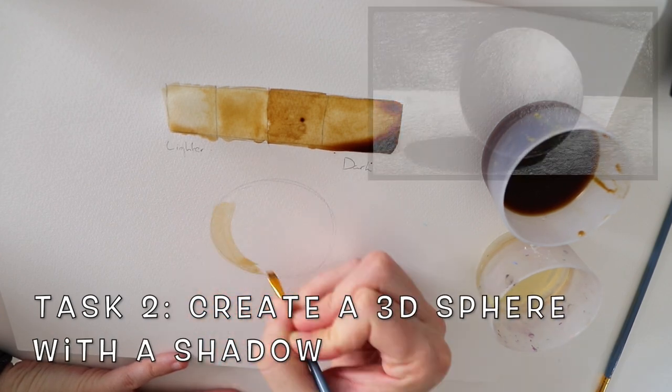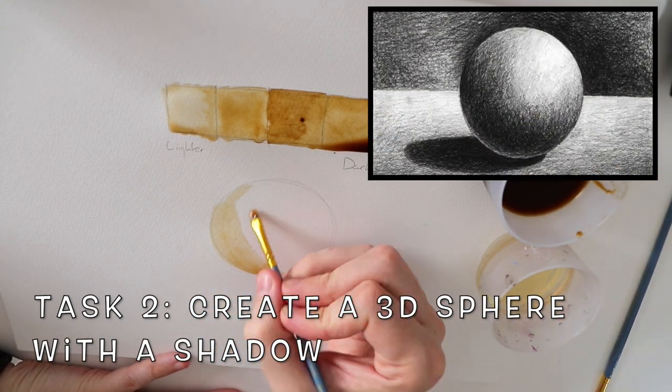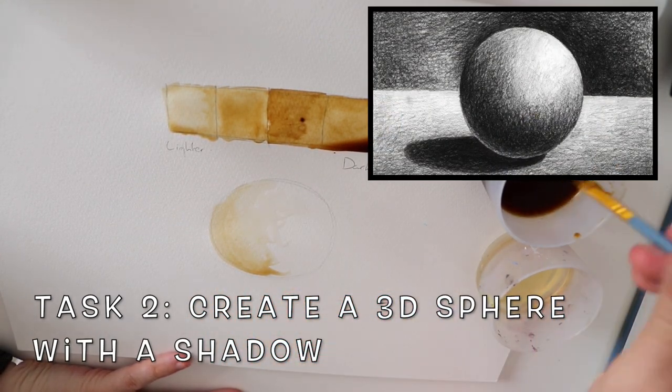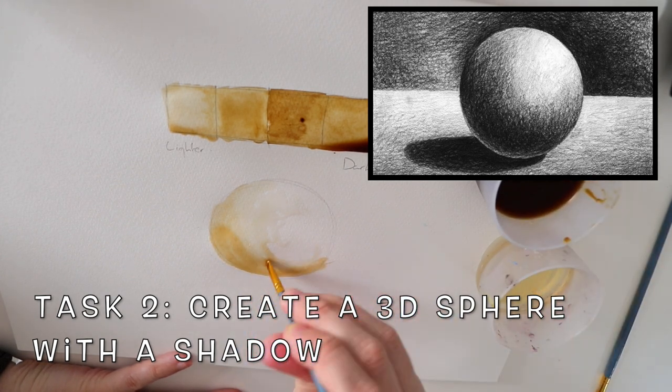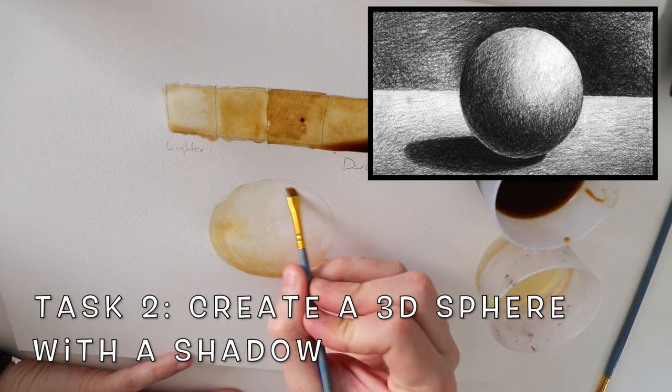For the next task you're going to draw a circle and we're going to turn it into a sphere by adding different variances of tone to it. We're going to have a darker side, a middle side, and a lighter side.